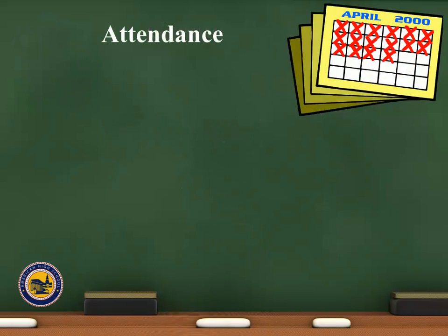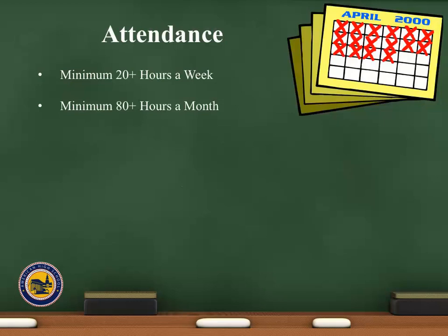Attendance is very important to American High School. The following attendance requirements apply to all full-time students, and are also meant to ensure that you are following your state's attendance requirements. If you have any questions about your state's requirements, please contact your local school district. We require a minimum of 20 hours a week, and at the end of the month you must have a minimum of 80 hours. Your hours are maintained automatically in the student site.